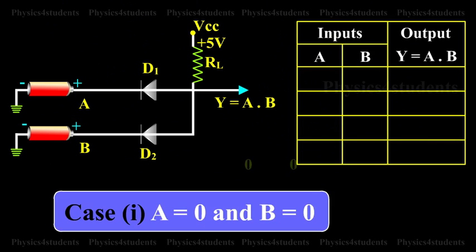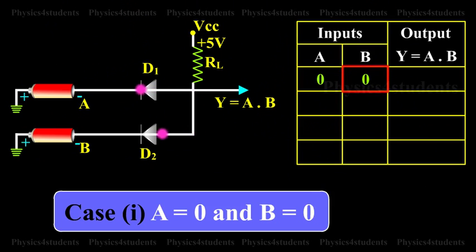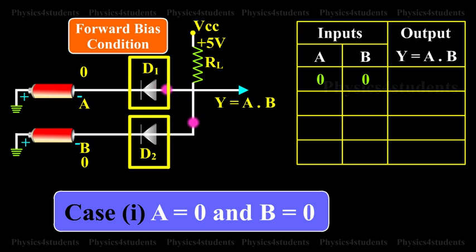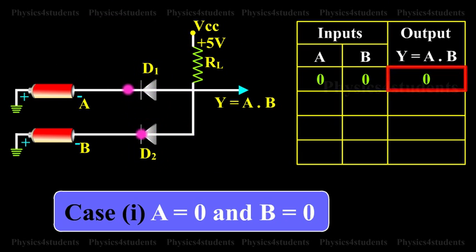Case 1: A is equal to 0 and B is equal to 0. When A and B are 0, both diodes are in forward bias condition and they conduct and hence the output will be 0 because the supply voltage VCC will be dropped across RL only. Therefore, Y is equal to 0.